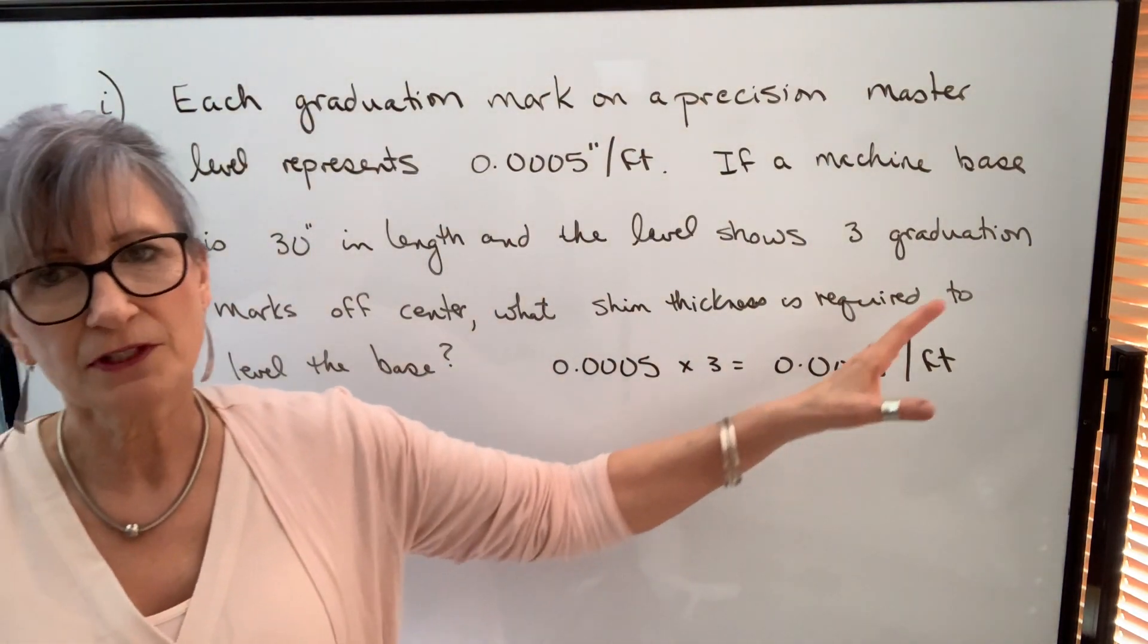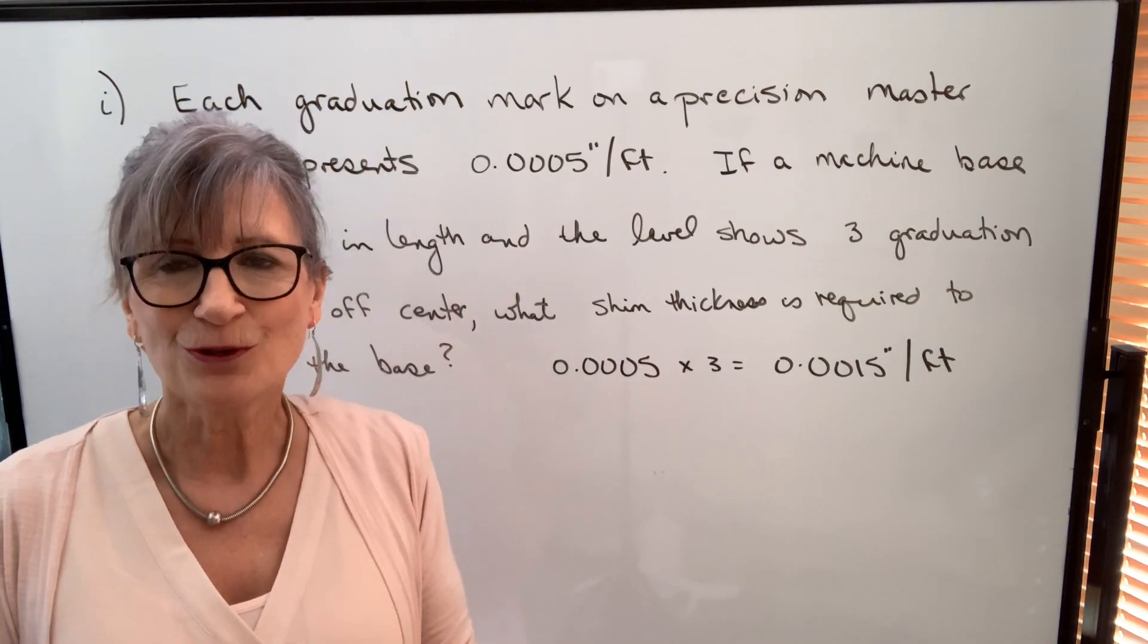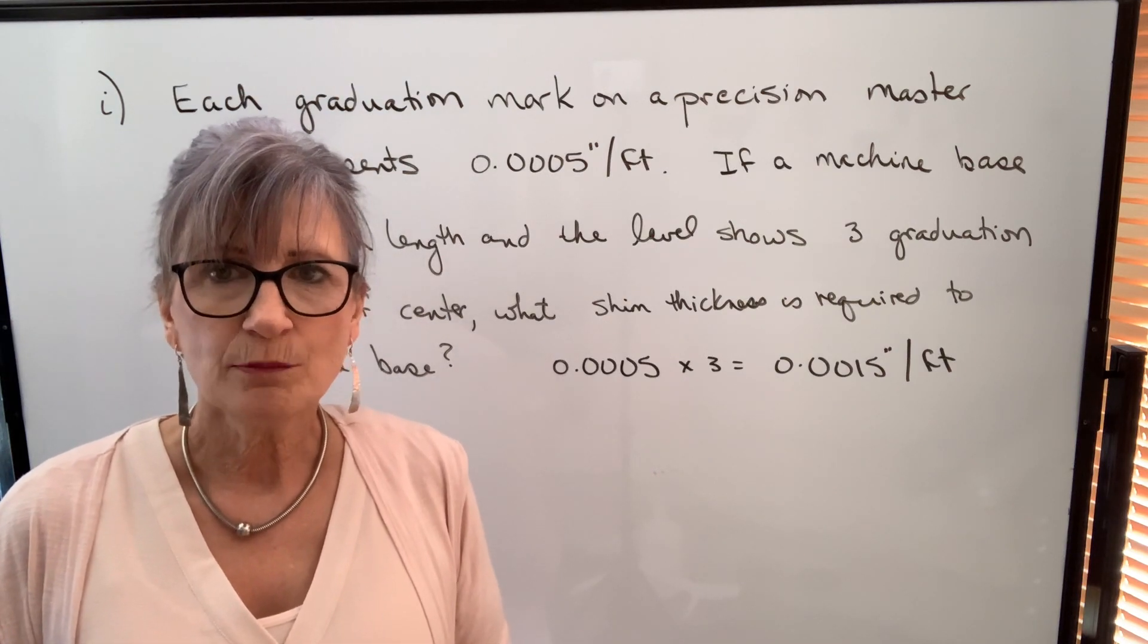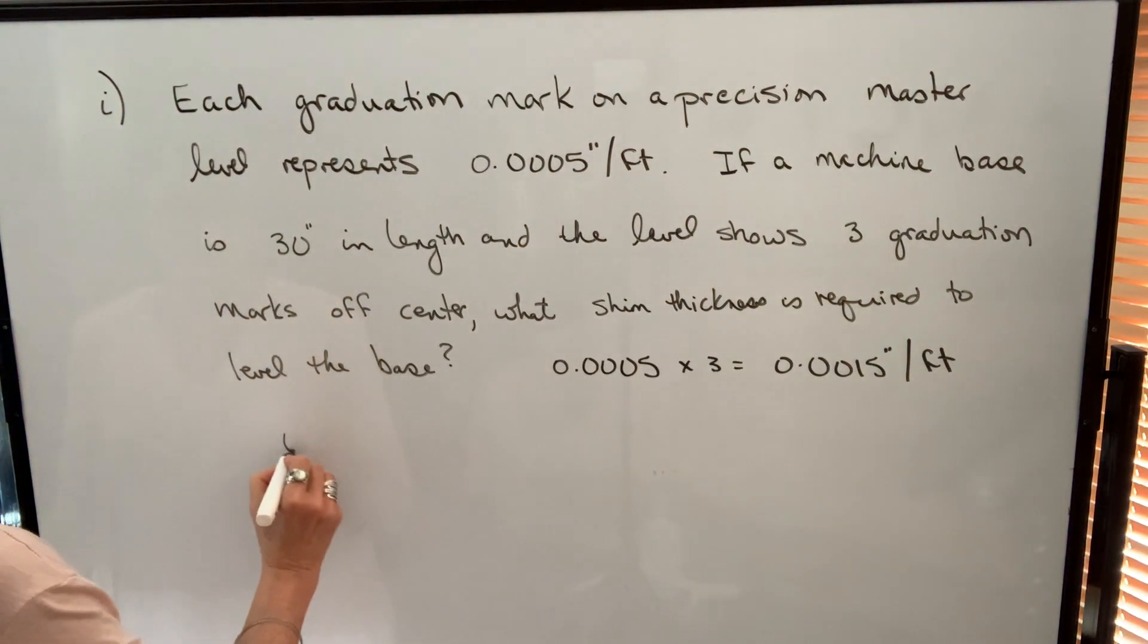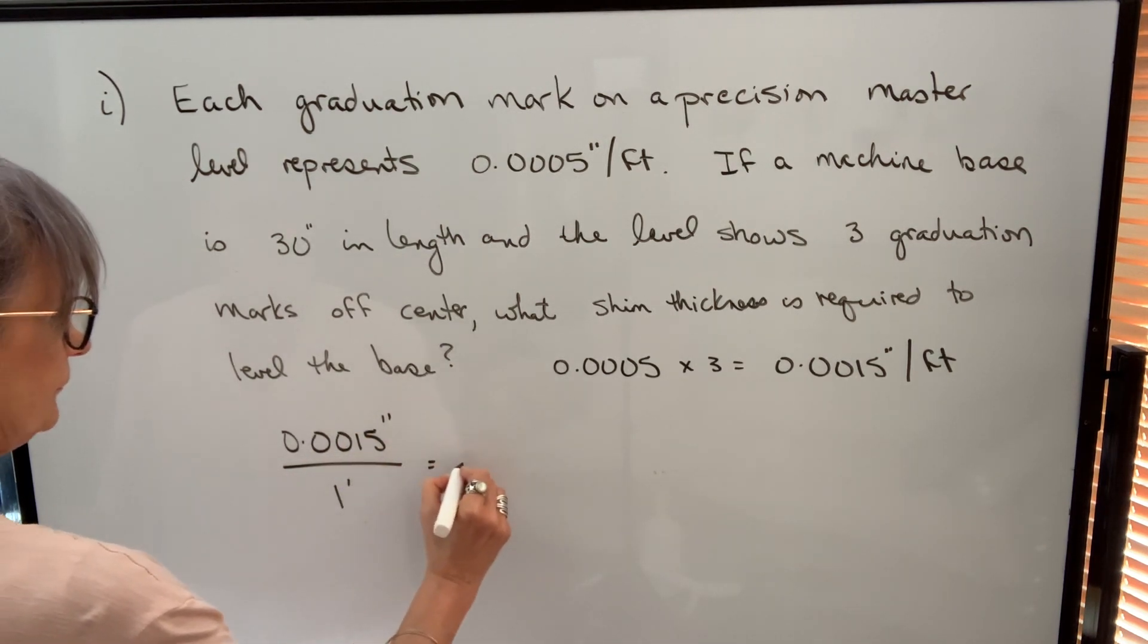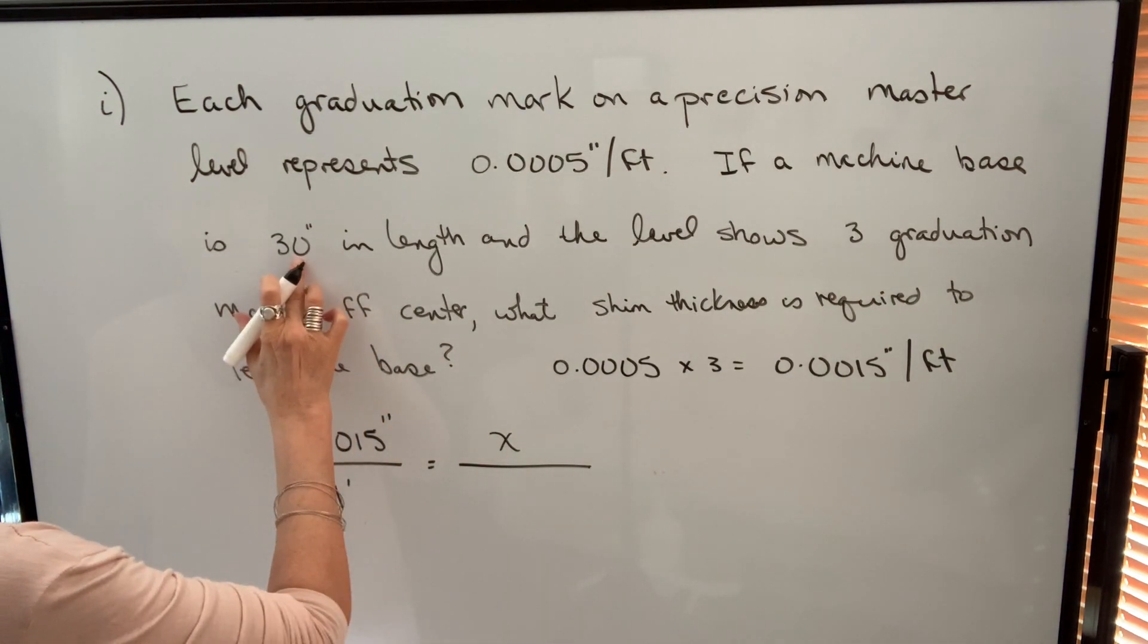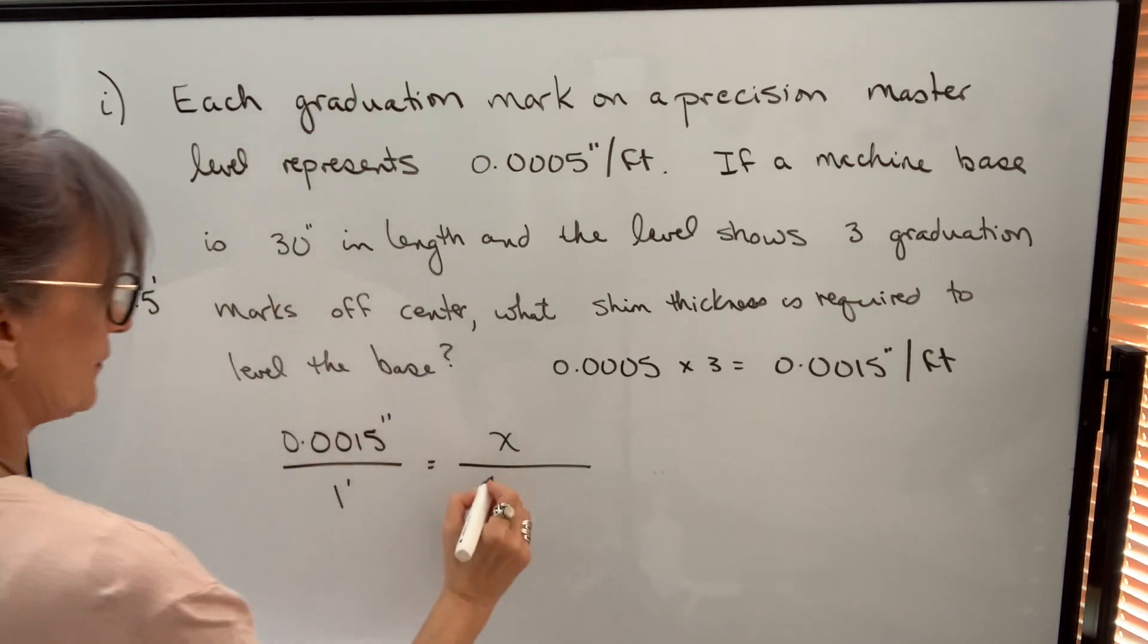So 15 ten thousandths of an inch per foot would be what our rate of misalignment would be. In order to determine what we need over a machine base of 30 inches, we have two options. We can work with our lengths in feet, or we can work with them in inches. When you set up a direct proportion, you set up a ratio of values. So if I set it up .0015 inches per one foot, I want to know how many shims I'm going to need. If this length is in feet, this length has to be in feet as well. So 30 inches is 2.5 feet.